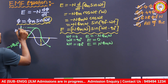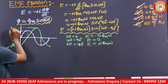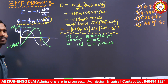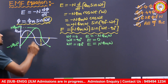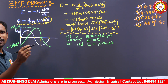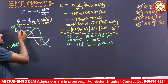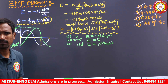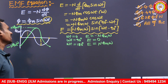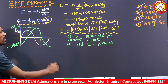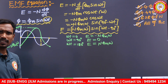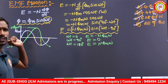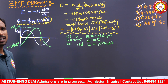The maximum value of EMF is E_max = N × Φ_M × ω. Note that this maximum EMF value is greater than Φ_M. This is our EMF equation, and you can see the EMF curve alongside the flux curve.